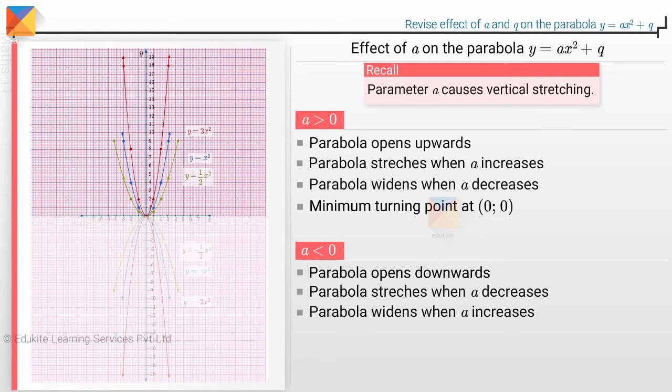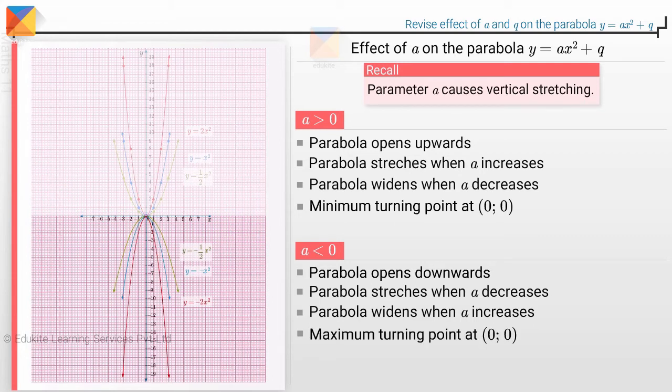Also note, if A is greater than 0 and Q is 0, the graph has a minimum turning point at 0, 0. If A is less than 0 and Q is 0, the graph has a maximum turning point at 0, 0.